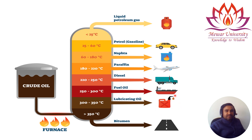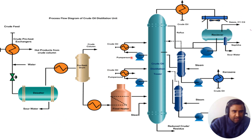The heaviest bottom product is bitumen, also called asphalt. Bitumen is not further refined or cracked — it is a waste product from the refinery that is nowadays used in road construction.